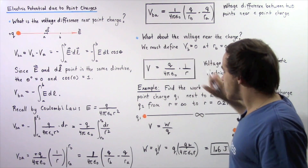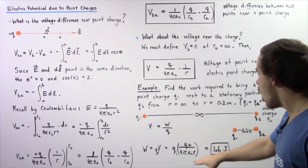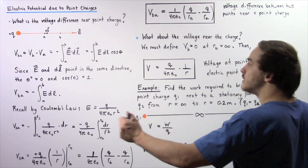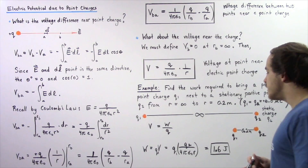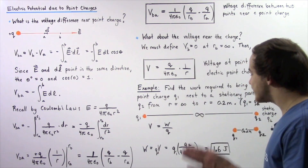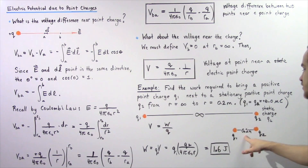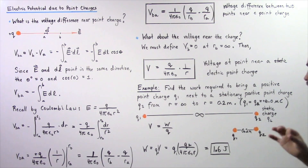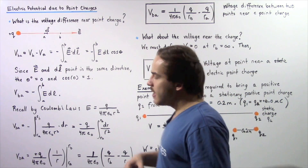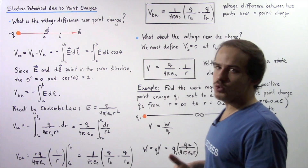We substitute V = Q2 / (4πε₀R) where R equals 0.2 meters. Since the voltage at infinite distance is defined as zero, we can directly apply this equation. With Q1 = Q2 = 6 × 10⁻⁶ coulombs, using the constants 4π and ε₀, the result is positive 1.6 joules. This is the work required to move charge Q1 from infinitely far away to 0.2 meters from point charge Q2.